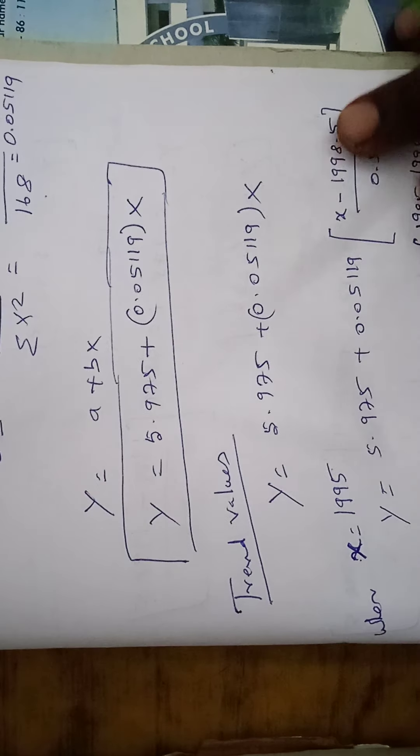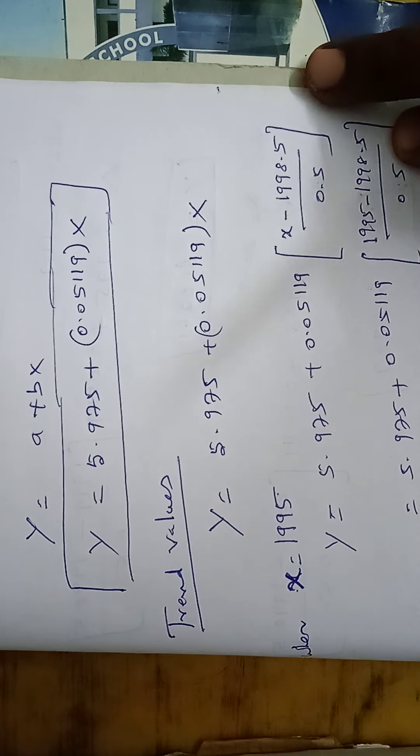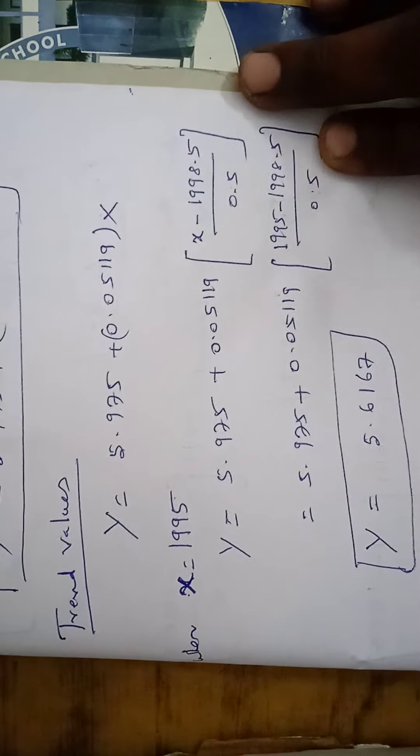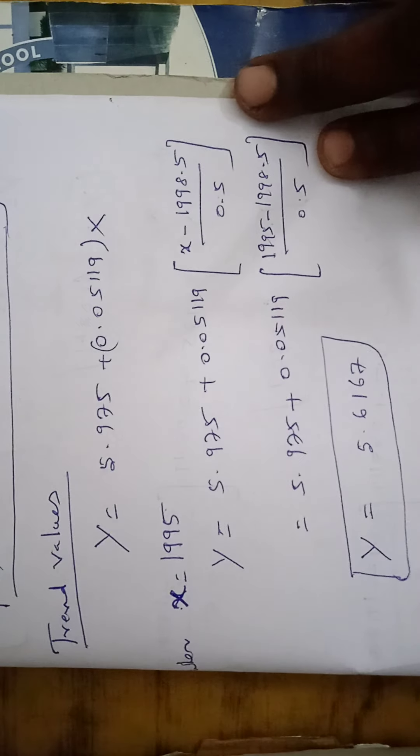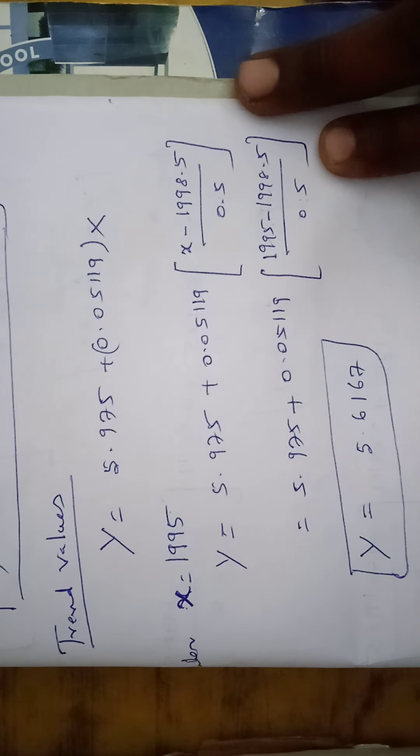Next we have to compute of each and every year trend values. So we have to apply the trend equation as Y equal to 5.975 plus 0.05119 X.